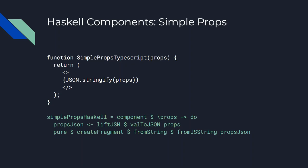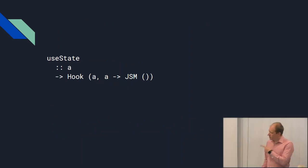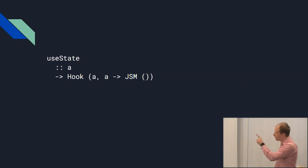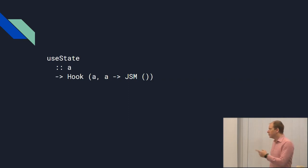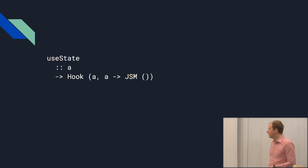We can transcribe this function — it does the same thing: takes props, renders them to JSON, puts them on the screen. We can also use useState. This is the first place where we get a little bit of benefit out of Haskell. In JavaScript, you don't have any types for this kind of thing, so the type A would just be any JavaScript value. Using the Haskell binding, we naturally make this a polymorphic function, so you can't accidentally put an int in your state when you needed a string. Not a huge change, but a little bit helpful.